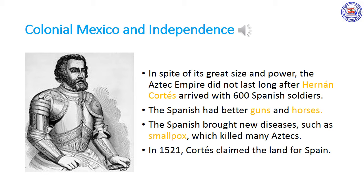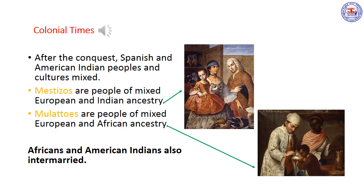In 1521, Cortés claimed the land for Spain. After the conquest, Spanish and American Indian peoples and cultures mixed. This mixing formed a new Mexican identity.